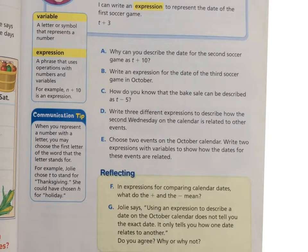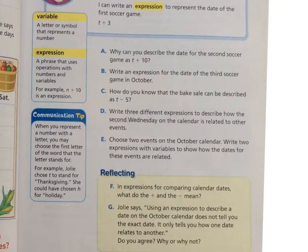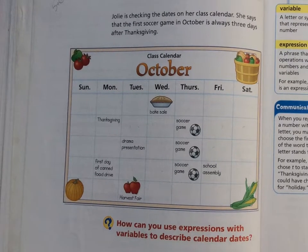Letter A: Why can you describe the date for the second game as T plus 10? Press pause and write down your answer and come back when you're finished. If you came up with that the soccer game is 10 days after Thanksgiving, then you got it right. Because seven days after the first game, which is three days after Thanksgiving, is 10 days after. Here's Thanksgiving: one, two, three, four, five, six, seven, eight, nine, ten.